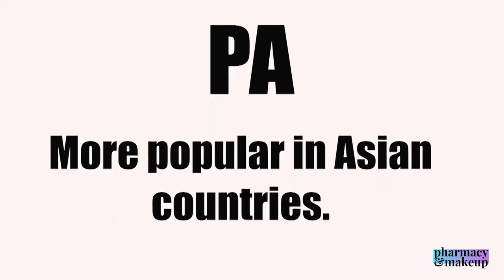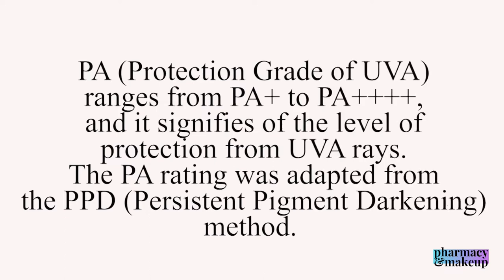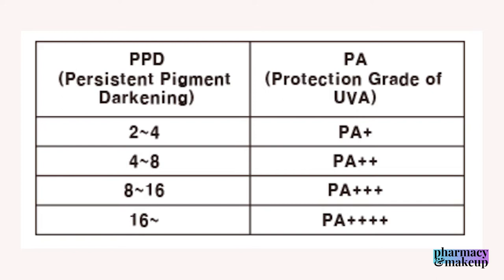PA stands for protection rate of UVA and is more popular in Asian countries. It's similar to PPD but uses plus signs, ranging from PA+ to PA++++. PA+ translates to PPD 2–4, PA++ to PPD 4–8, PA+++ to PPD 8–16, and PA++++ to PPD over 16.